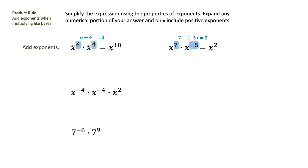Don't forget when you work on these examples that all final answers must have positive exponents. So in this third example, when we take these exponents and add them together, negative 4 plus negative 4 plus 2 equals negative 6. That does give us x to the negative 6 power.